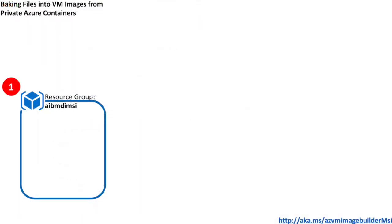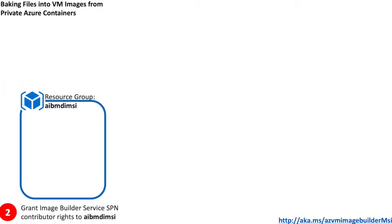Step one: you're going to need to create a resource group. This is going to be used by ImageBuilder to inject the custom image at the end, and it's also going to be used for the ImageBuilder template artifact. You need to grant the ImageBuilder SPN contributor rights to this.